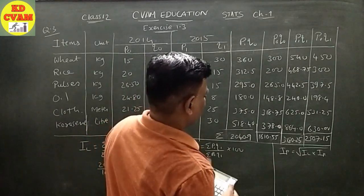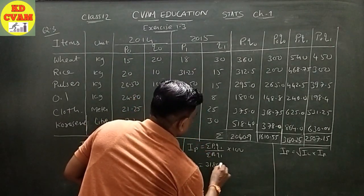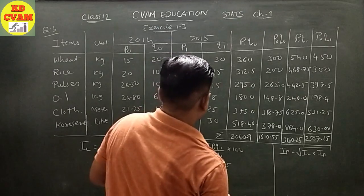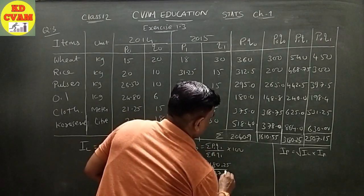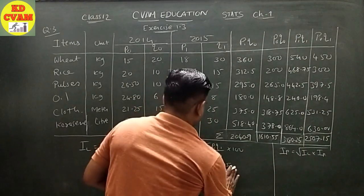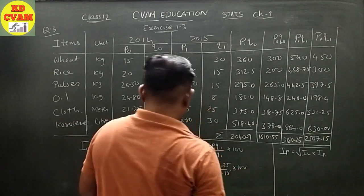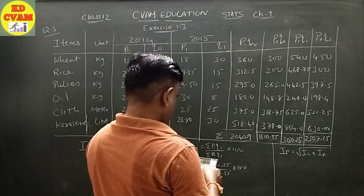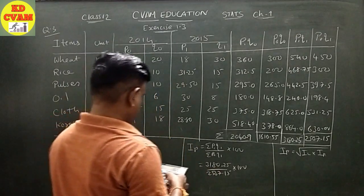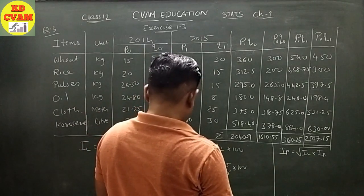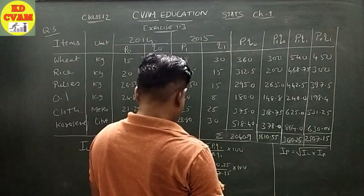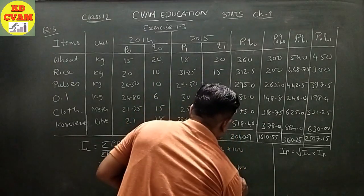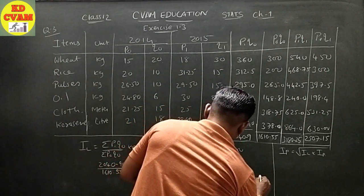Next is Fischer's formula: IF equals square root of IL into IP. So square root of 126.72 into 126.85 equals 126.78. This is our answer.